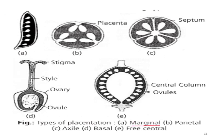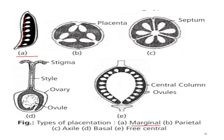The diagram shows marginal placentation, where the placenta is formed along the fused margins of the ovary. The gynoecium must be monocarpellary. In Fabaceae, the ovary is unilocular, meaning it contains only one chamber. The ovary that possesses a single chamber is referred to as unilocular.